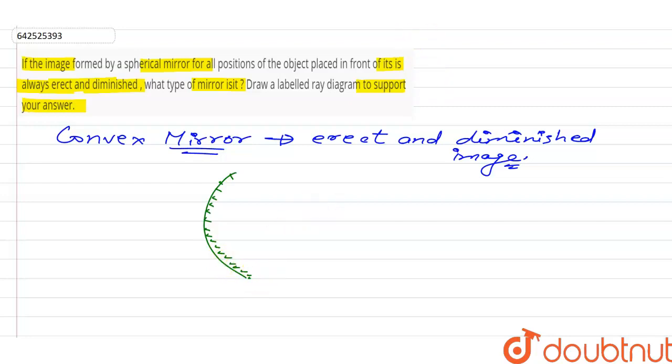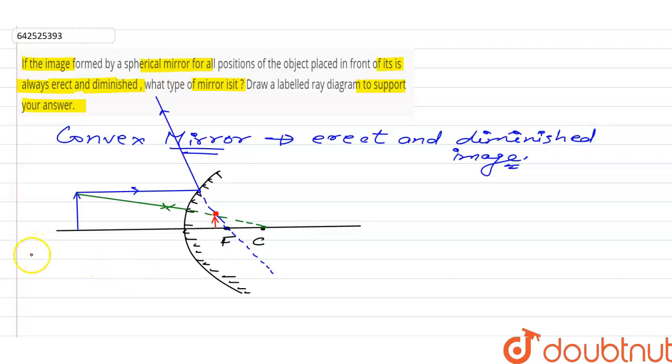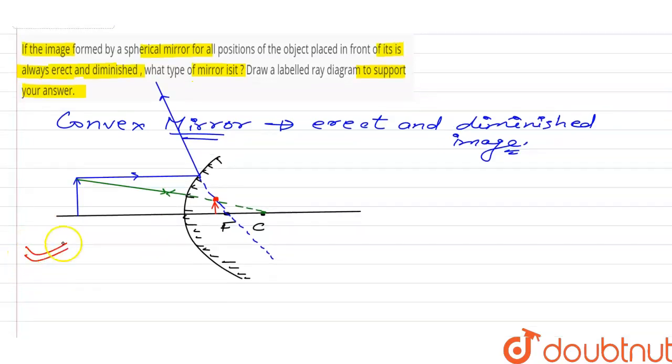This is the principal axis for convex mirror. One ray of light incident parallel to the principal axis, so after reflection it passes through the focus.